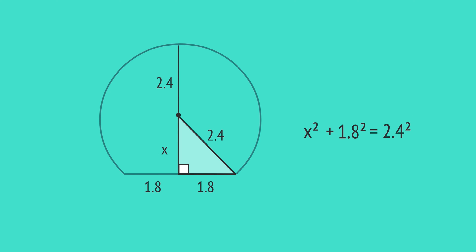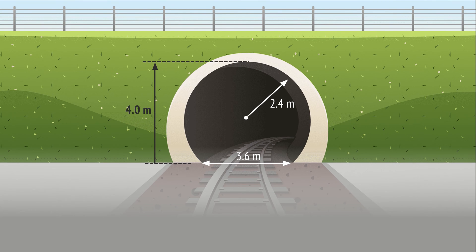Substitute the side lengths. Subtract 1.8 squared from both sides and take the square root to give x. Then enter this into a calculator to give x equals 1.6. Now we can calculate the height h by adding the radius of 2.4 to x, giving 4.0 meters, and so the tunnel's height.